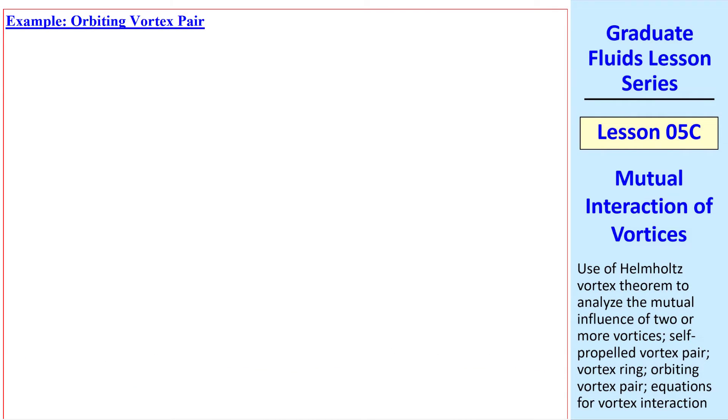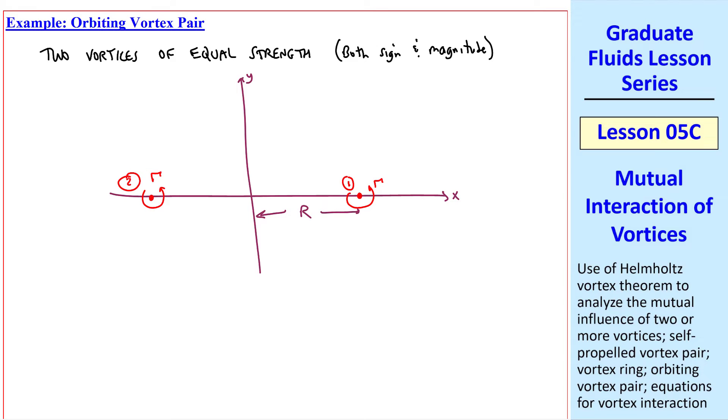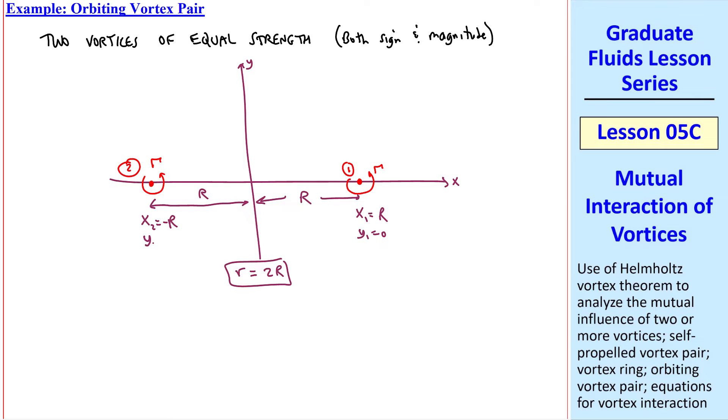Our next example is an orbiting vortex pair. Consider two vortices of equal strength, equal in both sign and magnitude. Again in our XY plane, we'll let vortex 1 be here with circulation gamma at distance r from the y-axis. Vortex 2 is identical with circulation gamma, also at distance r. The net distance between the two is thus 2r. These are the initial locations of our two vortices. Again, we can easily figure out what happens to these. The induced velocity of vortex 2 on vortex 1 will be straight up with magnitude gamma over 2 pi r, or gamma over 4 pi capital R. Meanwhile, vortex 2 will be induced downward with the same magnitude of velocity, but opposite direction.